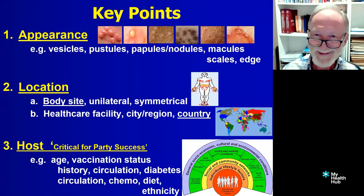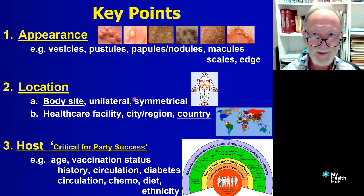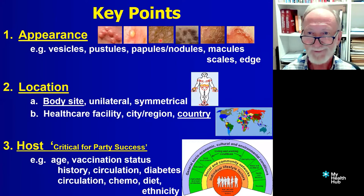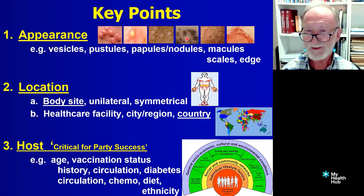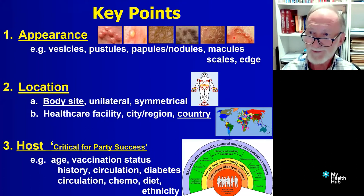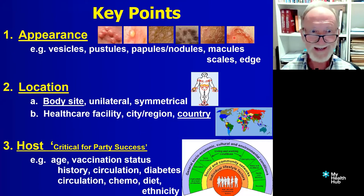For skin and soft tissue, there are three key points. Number one is the appearance. Vesicles are little things with fluid in them, and a vesicle with pus in it is a pustule. Then we have nodules or papules, which are raised above the skin but firm — there's no fluid in them at all. Then we can have macules, which is just discoloration — skin with a discoloration but quite flat. And then we can have scales, so scaly skin. It's important to know what the edge of the rash is like — can you see an edge or is there no edge at all? All those things, when you look up a textbook, are really useful to help categorize things.